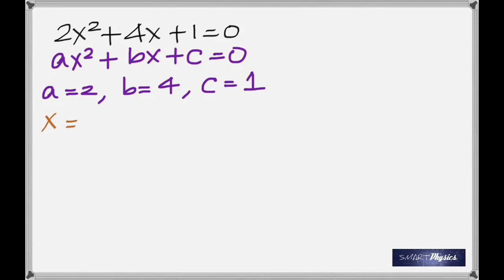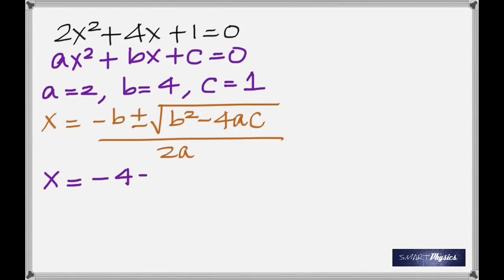Now the root of the quadratic equation is given by this formula: x = (-b ± √(b² - 4ac)) / 2a. So now you've got to simply substitute carefully. b is 4 but it's minus 4, plus or minus. 4 squared is 16, minus 4 times 2 times 1, divided by 2 times 2.